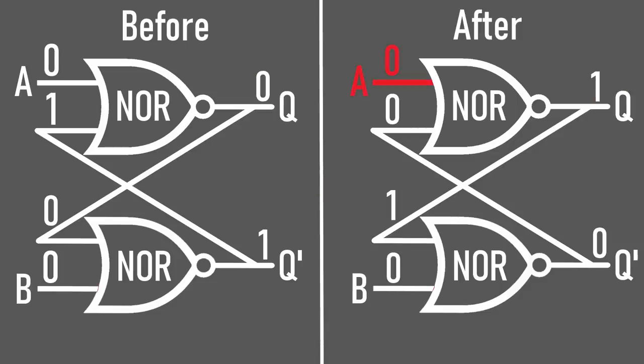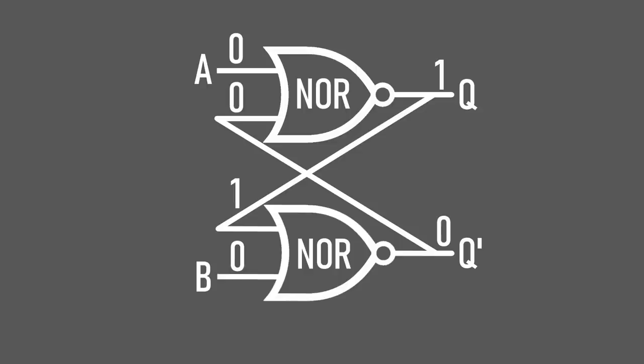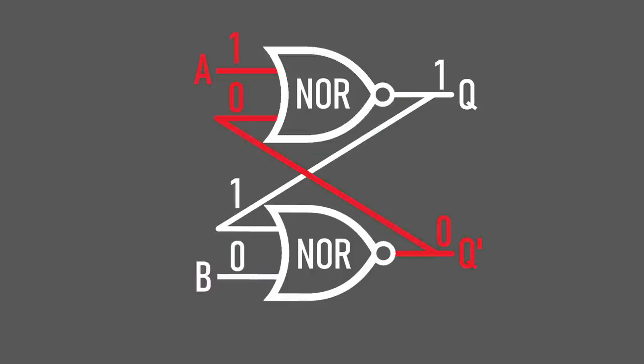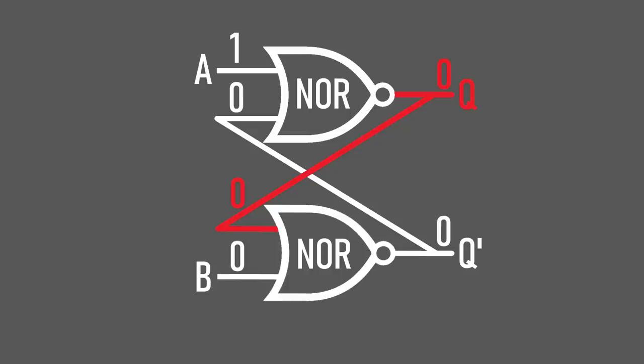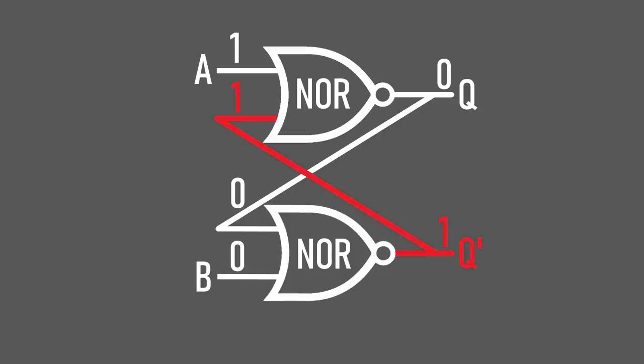That's where the other input line comes in. If we again take a look at our system where the output is on, let's try turning on input A and leaving B off. Looking at the top gate, it's receiving one on signal and one off signal, so the NOR gate turns off its output. Now looking at the bottom gate again, it's receiving an off signal from the other NOR gate and an off signal from input B. This turns the gate on, which finally runs back into the top gate. Even if we remove the input signal, the system remains in this reset state since the top NOR gate has at least one of its inputs on.